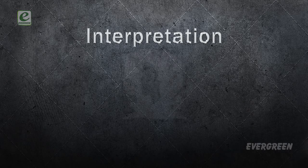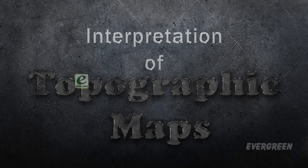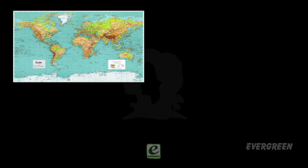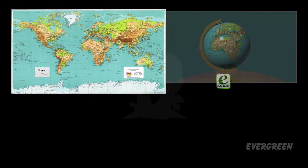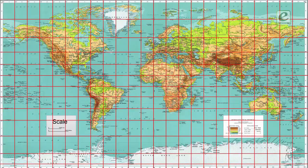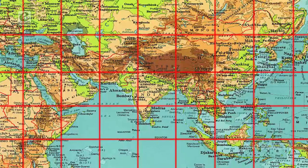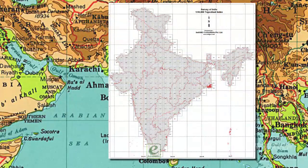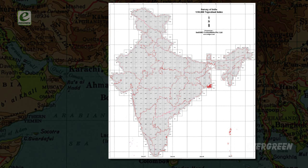Interpretation of topographic maps: grid reference. Most maps and globes prepared on small scale use the graticule formed by latitudes and longitudes to find the location of a place, but on a topographical map such a graticule will not serve the purpose because latitude and longitude lines are very widely spaced. Therefore we use a grid system in topographical sheets.